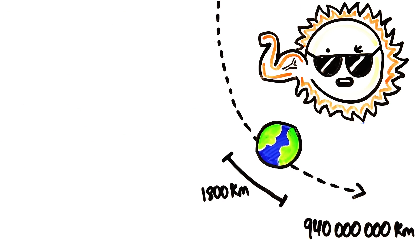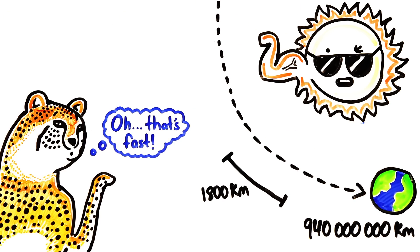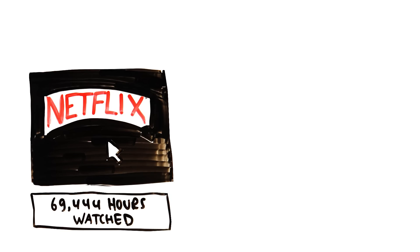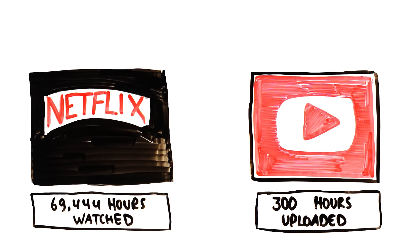The Earth will complete 1,800 kilometers of its 940 million kilometer journey around the sun, moving 1,034 times faster than a cheetah. 70,000 hours of Netflix are watched, 300 hours are uploaded to YouTube, and you can watch this video and subscribe.